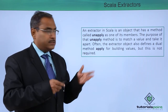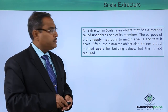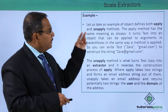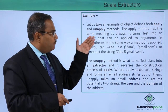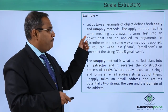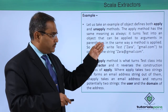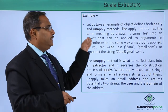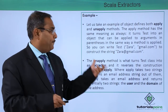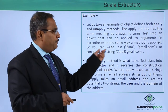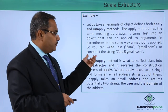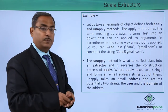Now let us explain this concept with one example for better understanding. We have taken an example of an object that defines both apply and unapply methods. The apply method has the same meaning as always — it turns the object into something that can be applied to arguments in parentheses in the same way a method is applied. So we can write Test("Zara", "gmail.com") to construct the string "Zara@gmail.com".